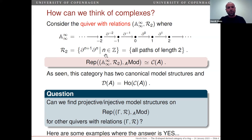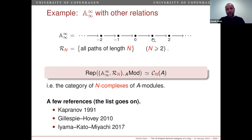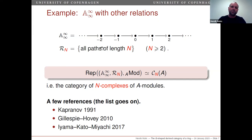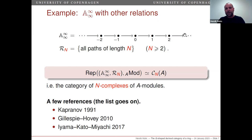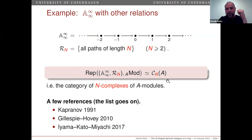Here's another example. We take the same quiver A-double-infinity, so diagrams of this shape, but instead of imposing that the composite of two consecutive maps should be zero, we now require that the composite of n consecutive maps should be zero. Our relation will be that all paths of length n, where n is some fixed number greater than two, should be zero. The representations of this quiver are diagrams of A-modules where the nth power of the differential must be zero. These gadgets are called n-complexes. Representations of this quiver with these relations give you the category of n-complexes, denoted C_n of A.